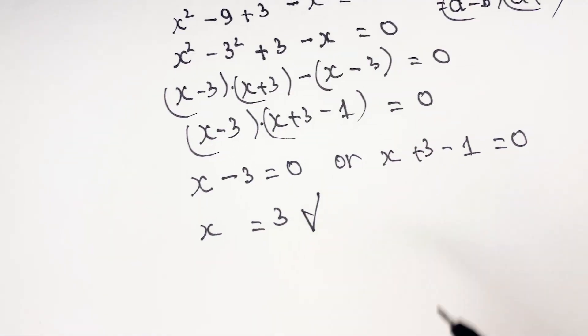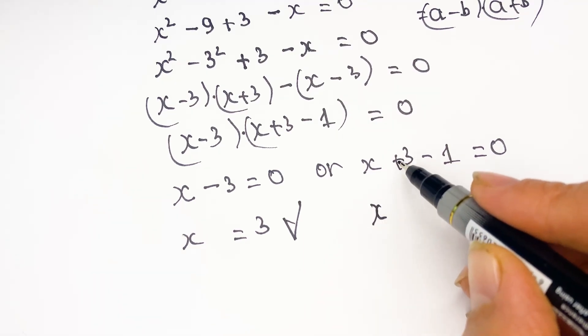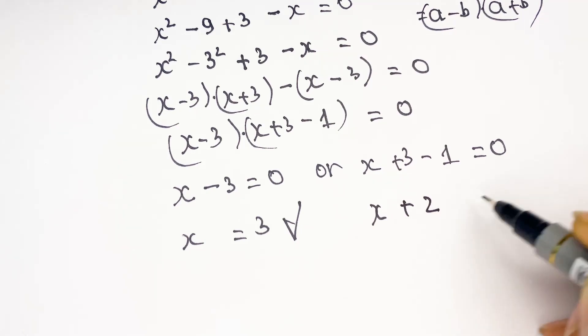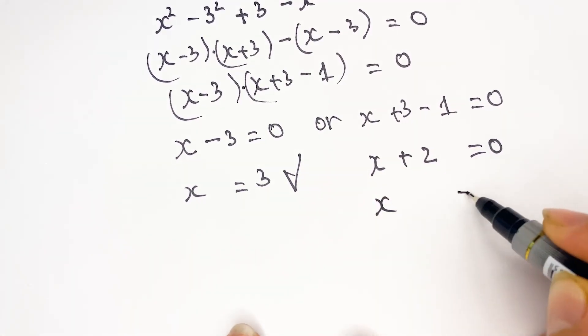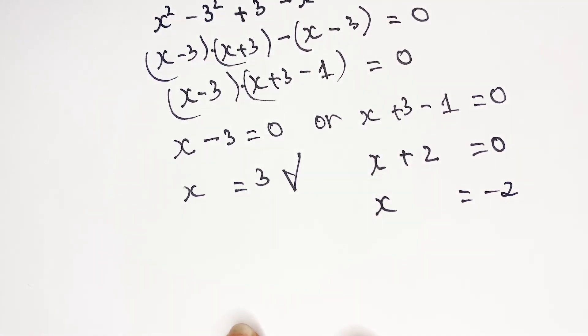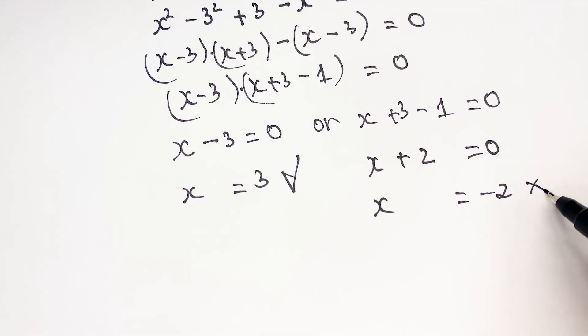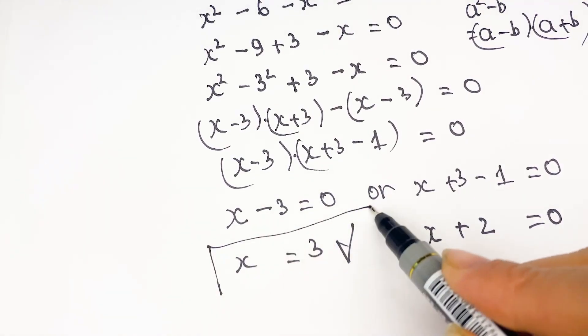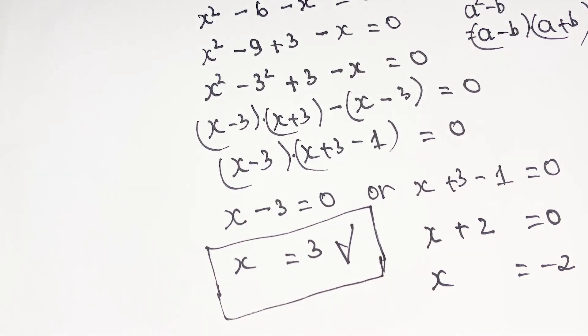And for the case 2, we have x plus 3 minus 1 plus 2 equal to 0. So we have x equal to minus 2. It doesn't satisfy the requirement. So we have only one value of x, x equal to 3.